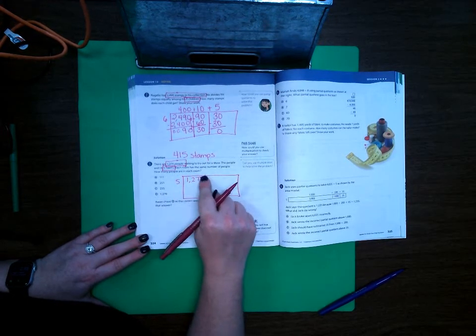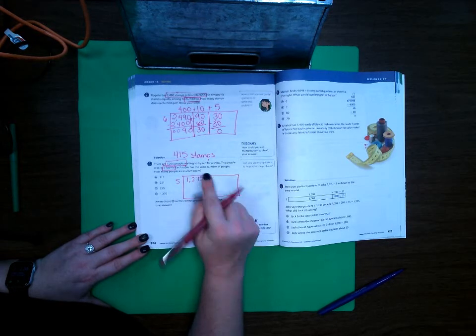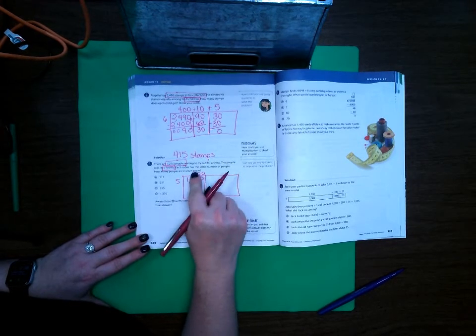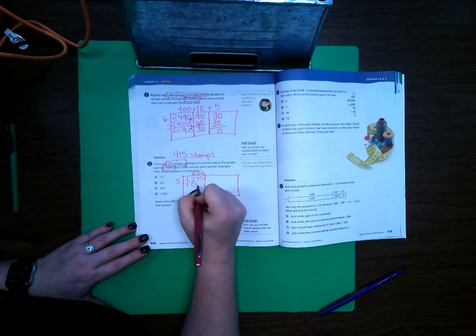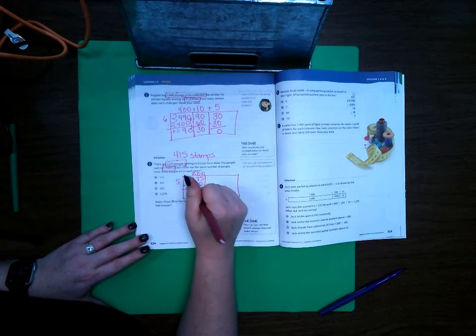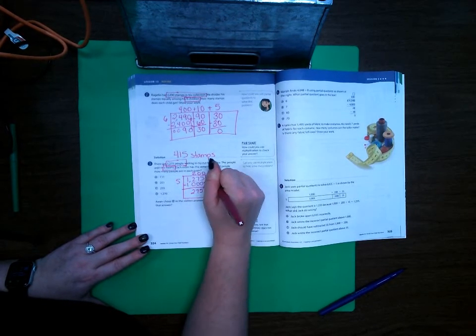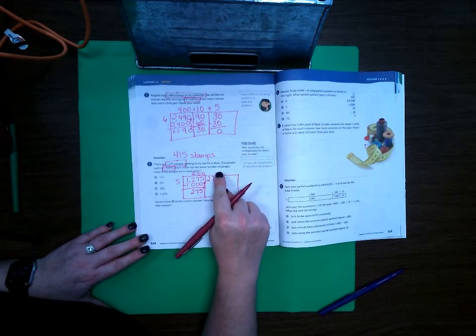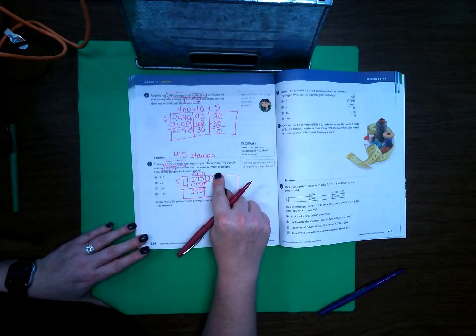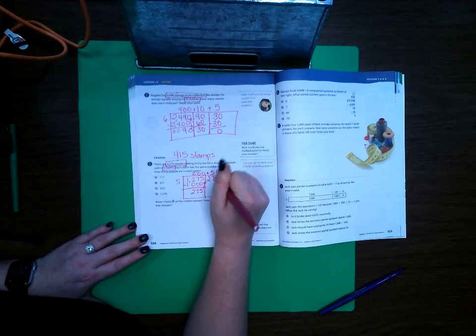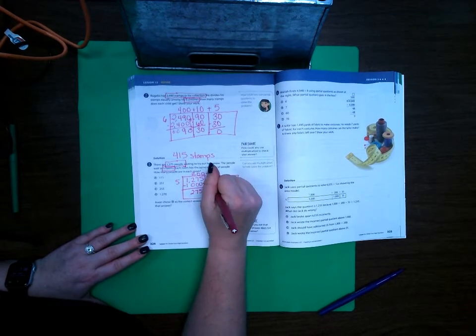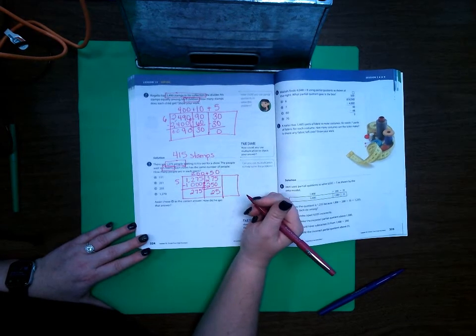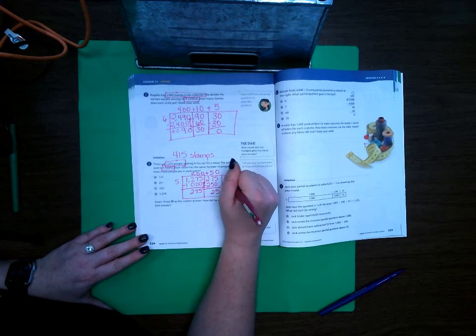Five cannot go into 1 but it can go into 12, 2 times. 5 times 200 is 1,000. Subtract and it leaves me 275. Bring my 275 up. 5 cannot go into 2 but it can go into 27, 5 times. So 5 times 50 is 250. Subtract and it leaves 25.